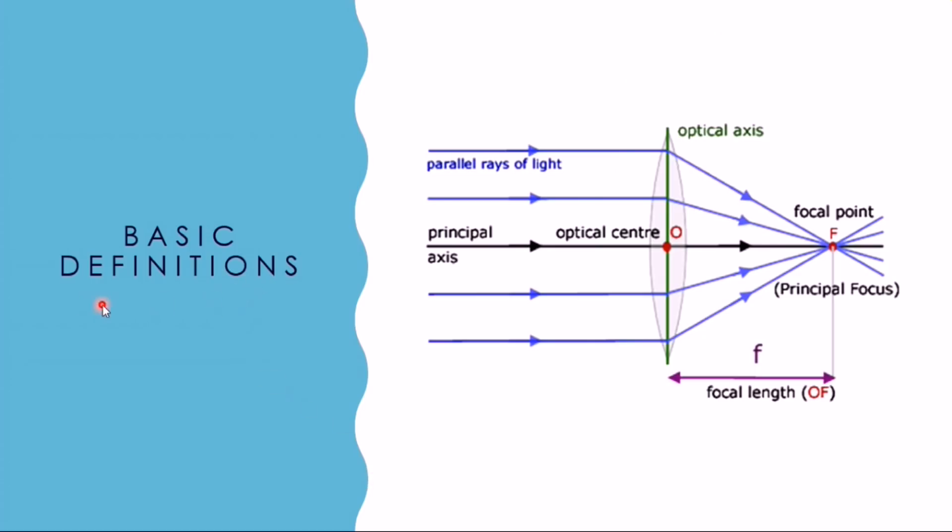First of all, basic definitions. These parallel rays of light after passing through the convex lens converge at a point. This point is known as focal point or principal focus. It is a point on the principal axis where rays of light parallel to the principal axis converge.